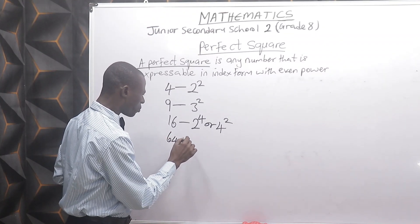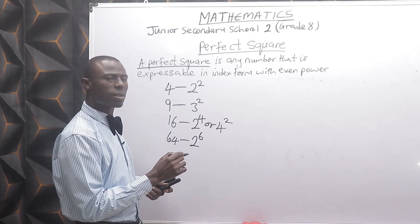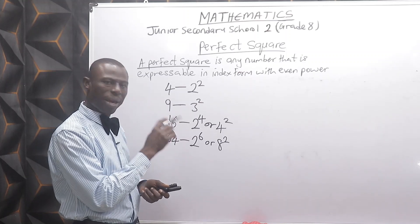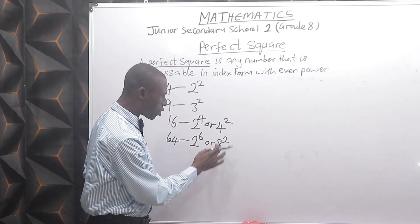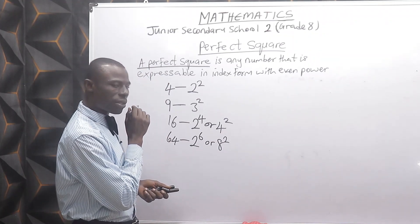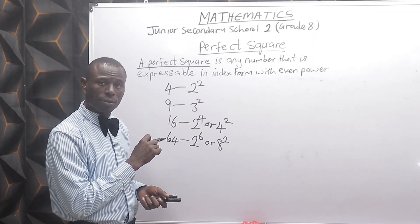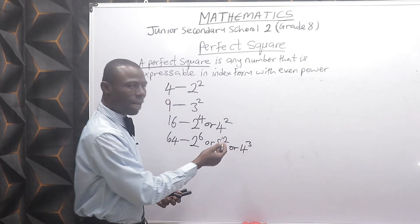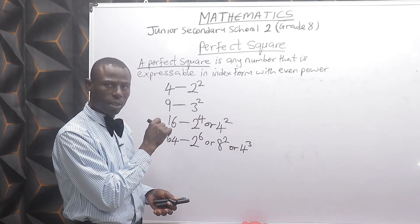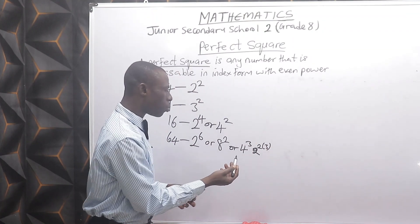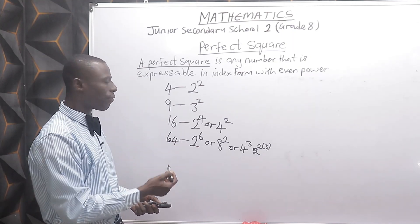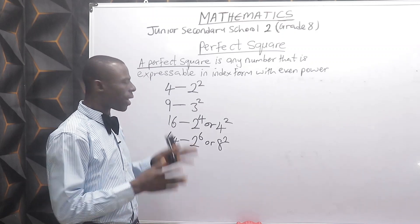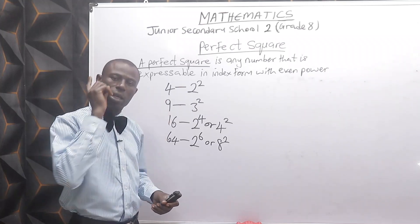Look at 64. It could be 2 raised to power 6, or 8 raised to power 2. Power 6, which is even, makes it perfect. Power 2, which is even, also makes 8 raised to power 2 perfect. Although 64 is also 4 raised to power 3, power 3 appears odd, but 4 can be changed to 2 squared, making it 2 raised to power 6. So 64 is indeed a perfect square.